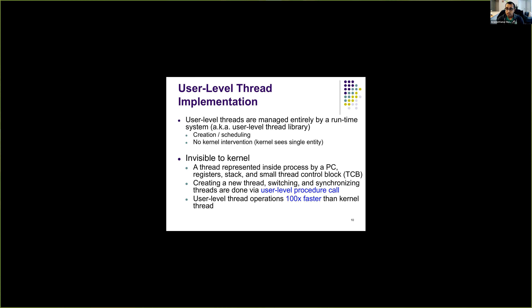The user-level thread library represents threads by maintaining a Thread Control Block (TCB) for each thread, storing register state, stack, and program counter — all maintained by the thread library in user space. Creating a new thread, switching, and synchronization are all done via user-level procedure calls with no system calls involved, because the kernel is unaware of the threads. A perfect example of this is pthreads — the user-level thread library that provides an abstraction of threads in user space.